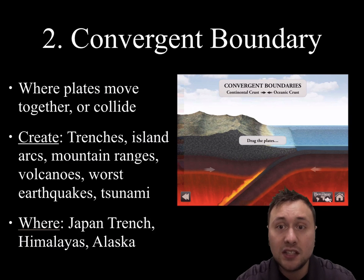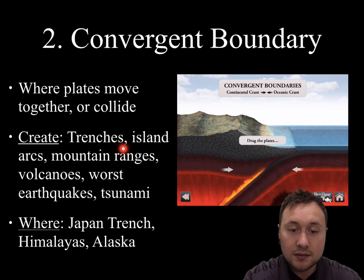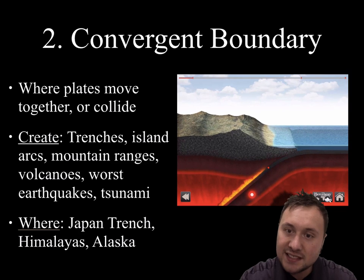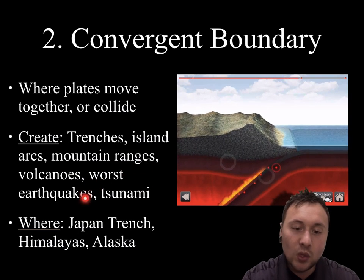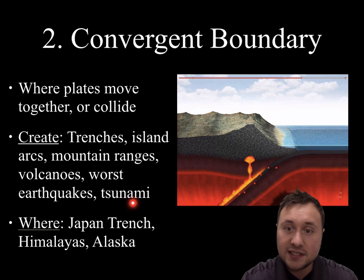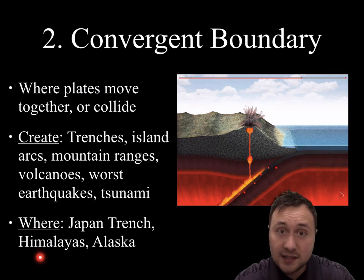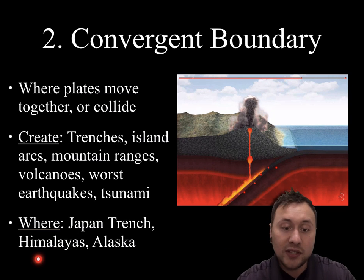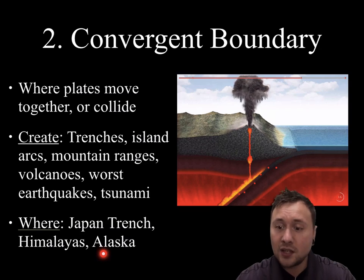Next, convergent boundary — where plates move together or collide. They can create trenches if there's a more dense oceanic crust, mountain ranges, volcanoes, and the worst earthquakes are caused by these types of boundaries. Tsunamis can also result if it's in an ocean area. Examples include the Japan Trench — that's why Japan gets many earthquakes — the Himalayas, where India has pushed into Asia creating large mountain ranges, and Alaska, which has many earthquakes and a long island chain caused by subduction and volcanic activity.